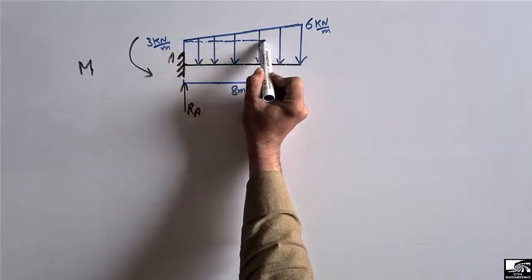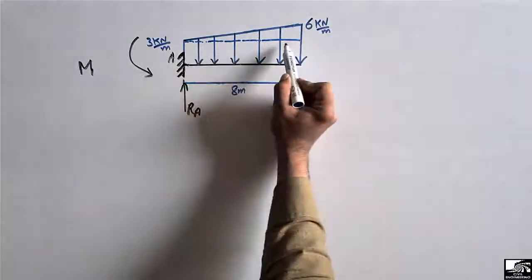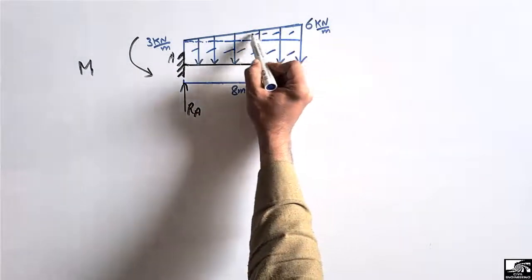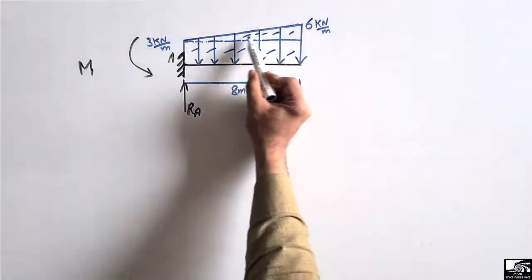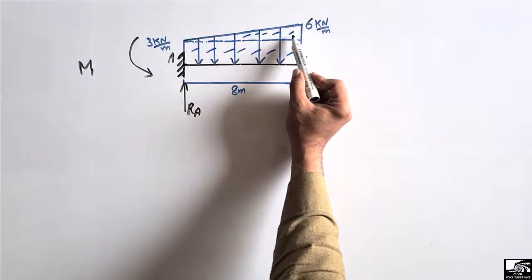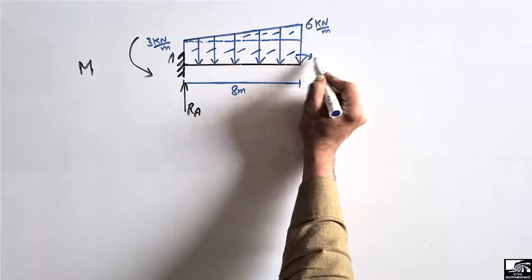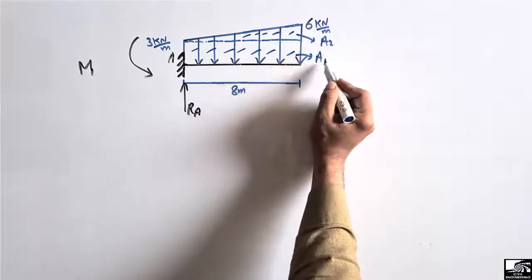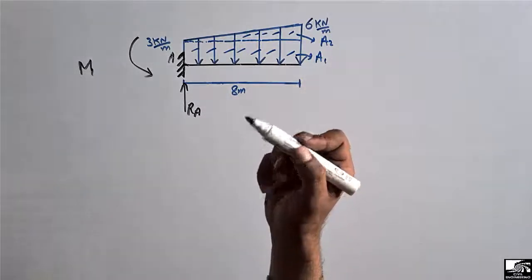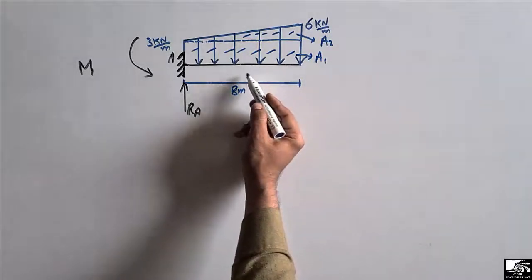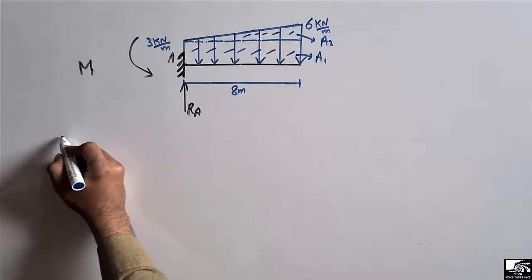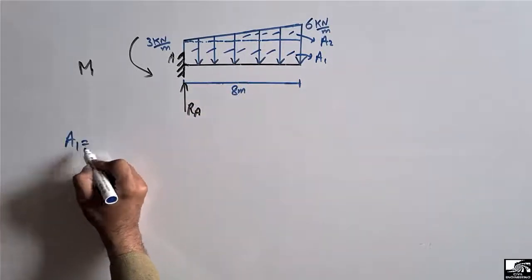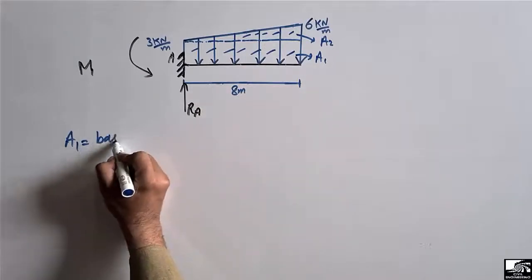To convert the trapezoidal load into a pointed load, we have to split it into two parts. One is a rectangle and the other is a triangle. This gives us area A1 for the rectangle and area A2 for the triangle. To find the total load, we find the area of the rectangle, which is base times height.